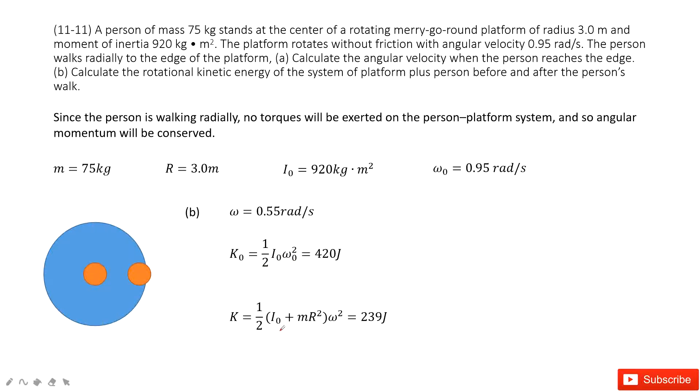And the final, we just consider the moment of inertia at the final. So we consider the I naught, this is from the merry-go-round, and this M R squared comes from the person, right? And then times the final angular velocity. Then we get the final answer there. Thank you.